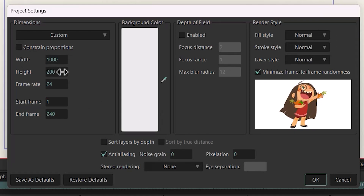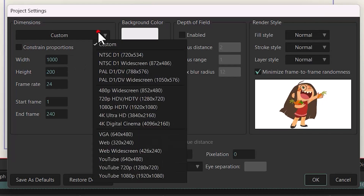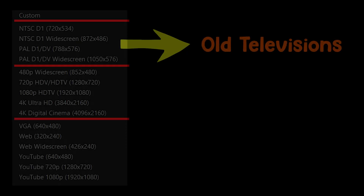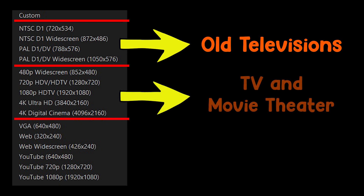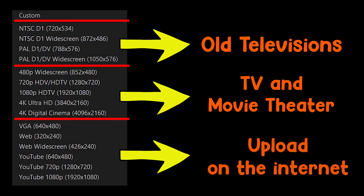Now let's talk about the presets. The first section presets have the dimensions of all televisions. The dimensions in the second section give the vibe of newer televisions or movies in theaters. And the last section presets are the dimensions used for videos uploaded on the internet.